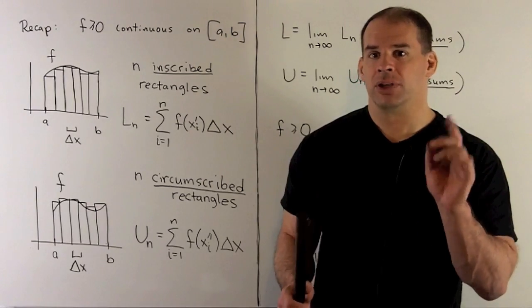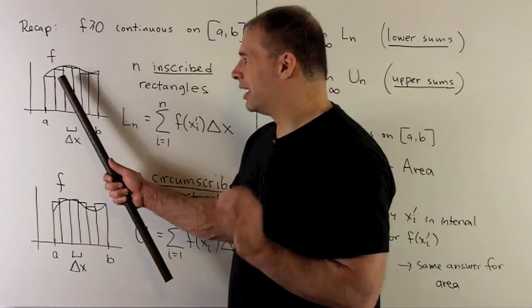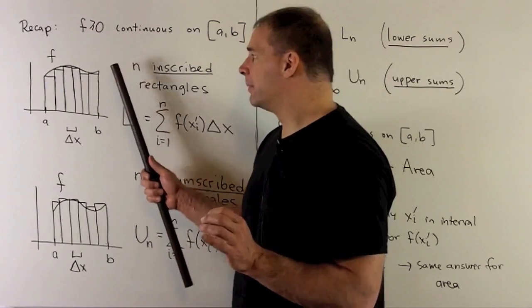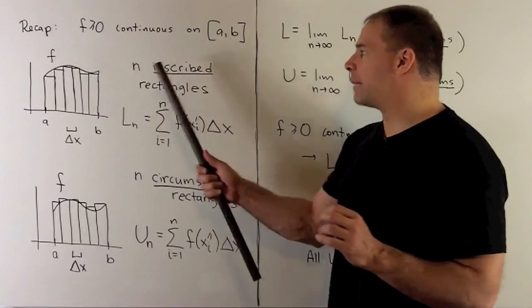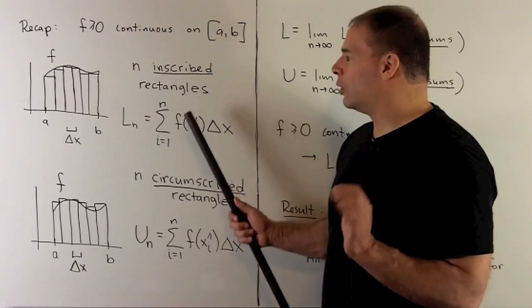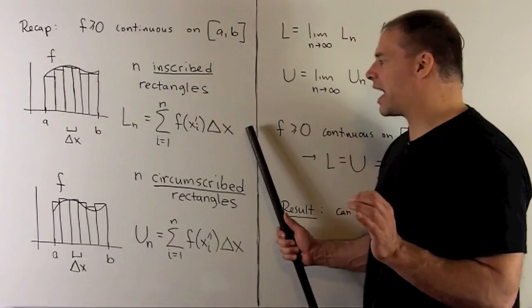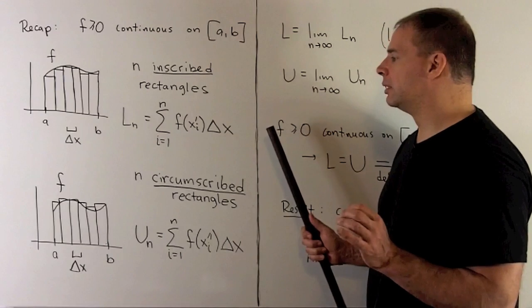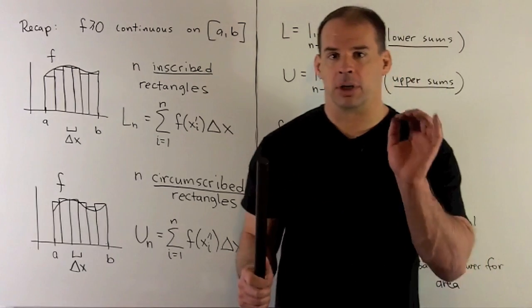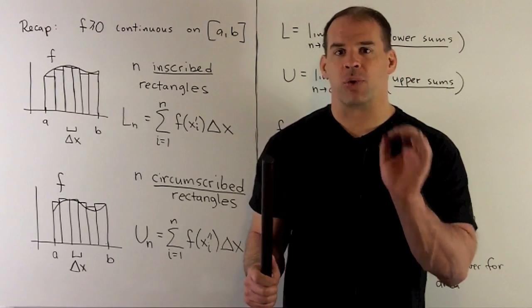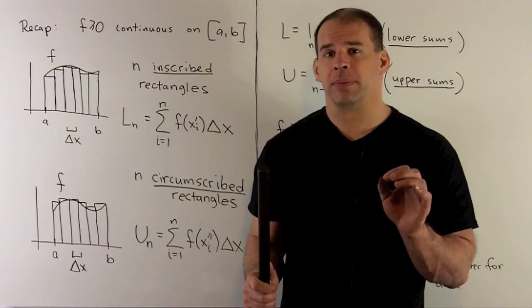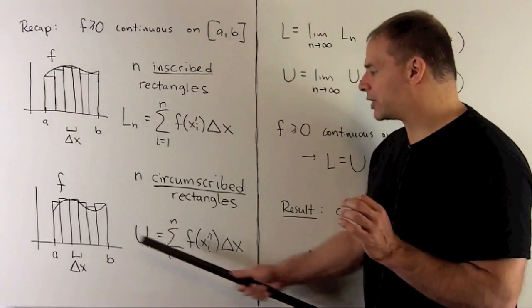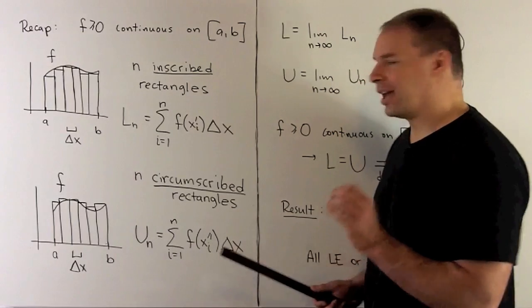We can arrange it so that all of our heights give us rectangles that live under the graph of f — in that case we'll call them inscribed rectangles — and then we take the sum of the area of each rectangle, we'll call that a lower sum. Similarly, we can arrange it so that the rectangles are on the outside of the graph, in which case we call them circumscribed rectangles, and then our approximation is called an upper sum.